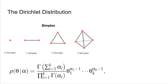Let's begin with the Dirichlet distribution. A Dirichlet random variable has k dimensions and a k-dimensional parameter alpha. Each component of alpha must be non-negative. The support of a Dirichlet random variable is the k-1 simplex. A simplex has points with each component being non-negative and summing to one. The first four simplexes are: the zero simplex is a point, the one simplex is a line segment, the two simplex is an equilateral triangle, and the three simplex is a tetrahedron.